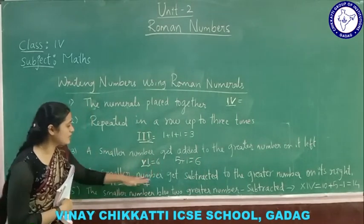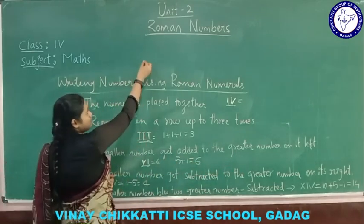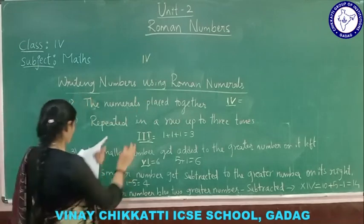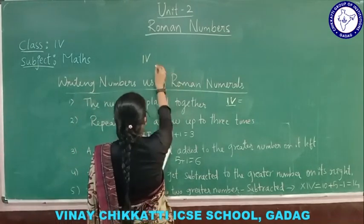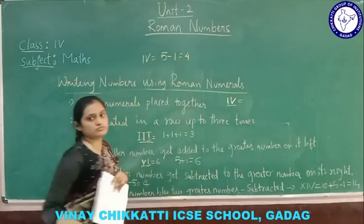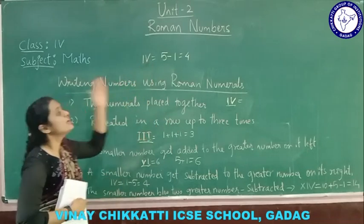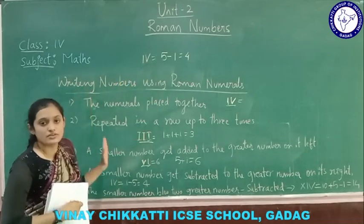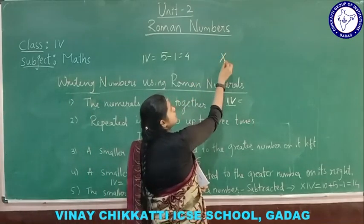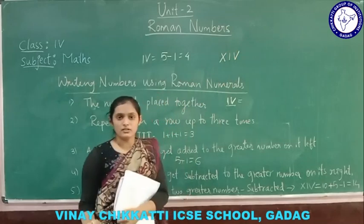The smaller number gets subtracted from the greater number on its right. When the smaller number comes before the greater number, you need to subtract. For example, I before V: 5 minus 1 gives 4. Whenever the smaller number comes before the larger number, you have to subtract. Sometimes, in between two larger numbers, you will find a smaller number.